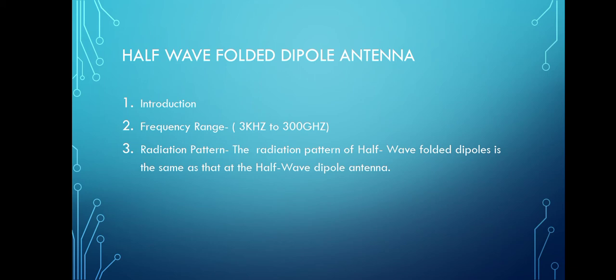If the diameter of the main conductors and the folded dipole are the same, there will be a fourfold increase in the feed impedance of the antenna. The radiation pattern of the half-wave folded dipole antenna is the same as that of the half-wave dipole antenna.